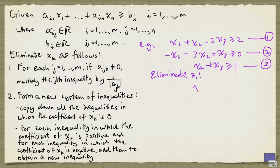And for this, we first copy down the inequality without x1, and that's 3. And there's only one new inequality we form, and that's obtained by adding 1 and 2. That gives us minus 2x2 minus x3 greater than or equal to 2, and let's label that 4.